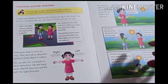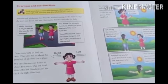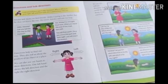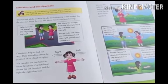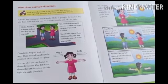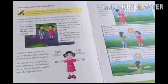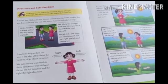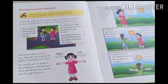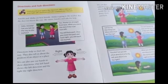Hello, welcome to the social science video classes. Yesterday we did new words and a small brief about directions and sub directions. I had shared a video showing the directions and sub directions. The main directions are known as cardinal directions and the sub directions are known as intermediate directions.